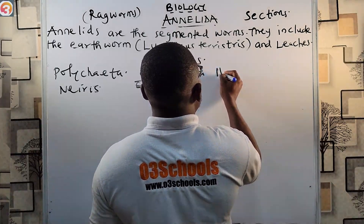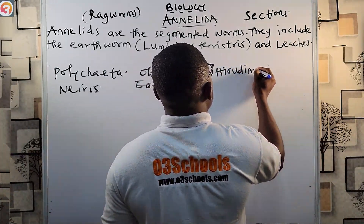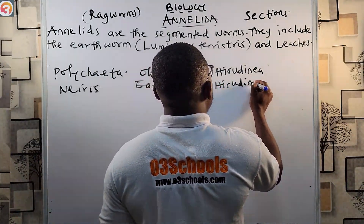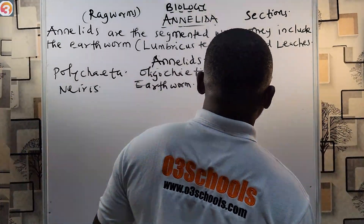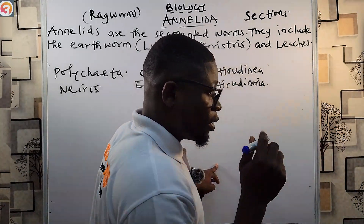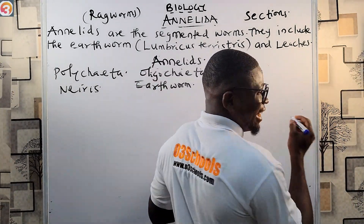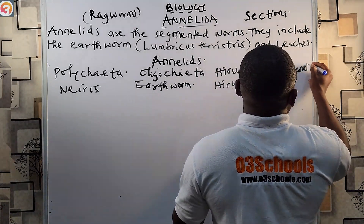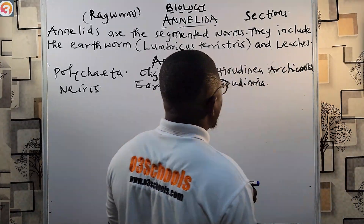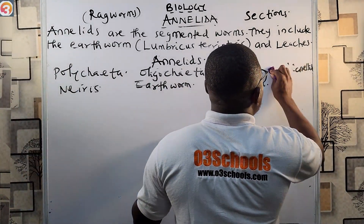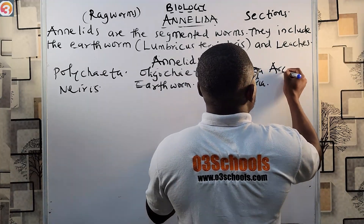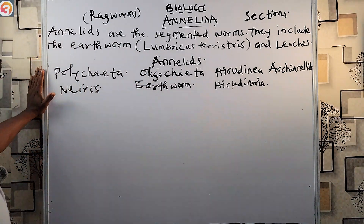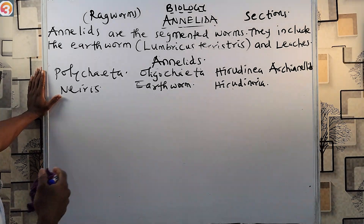Third, the Hirudinea — example is Hirudinaria (the leech). Fourth, the Acienetida (also called Acienelites). These are the four classifications of the phylum Annelida.